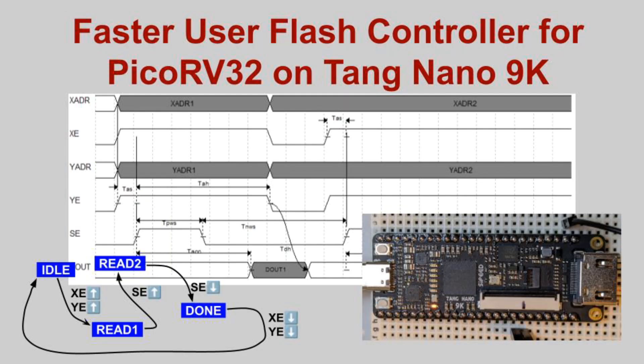Implementing my own controller for the Gowen user flash was interesting, and it was fun comparing it to the Gowen soft IP block described in my previous video. I've put the updated Tang Nano 9K project into another branch on GitHub — see the link below. I'll also include a link to the previous video, and see the PicoRV32 playlist for other related videos.